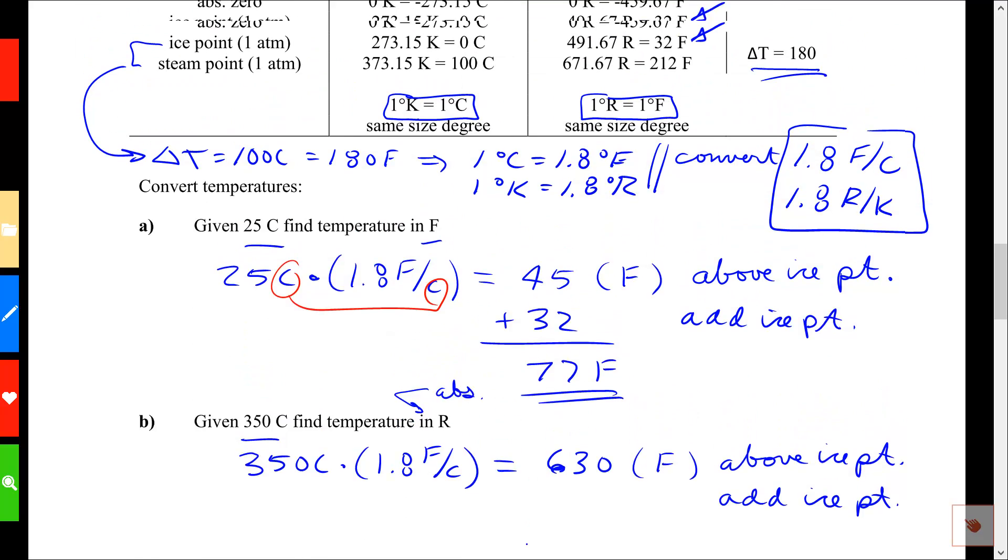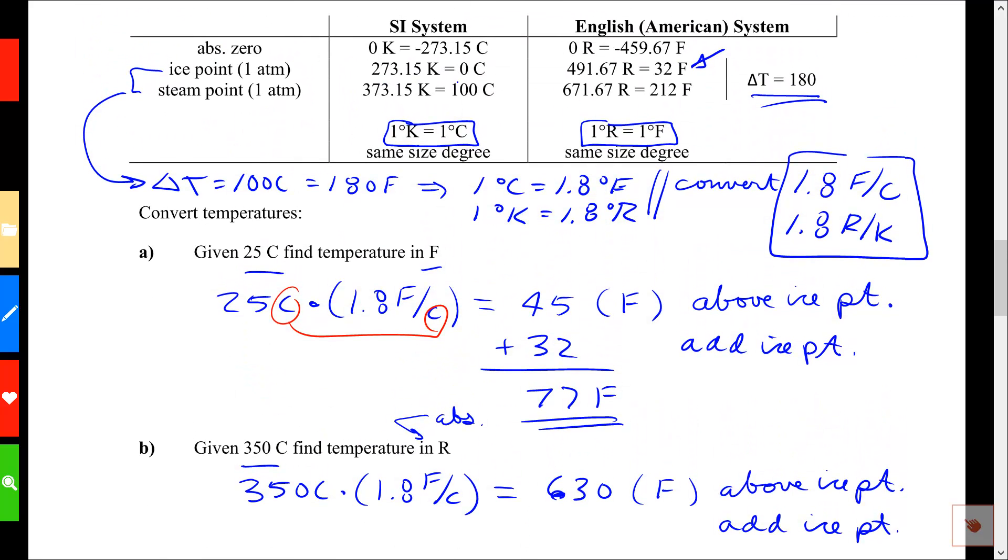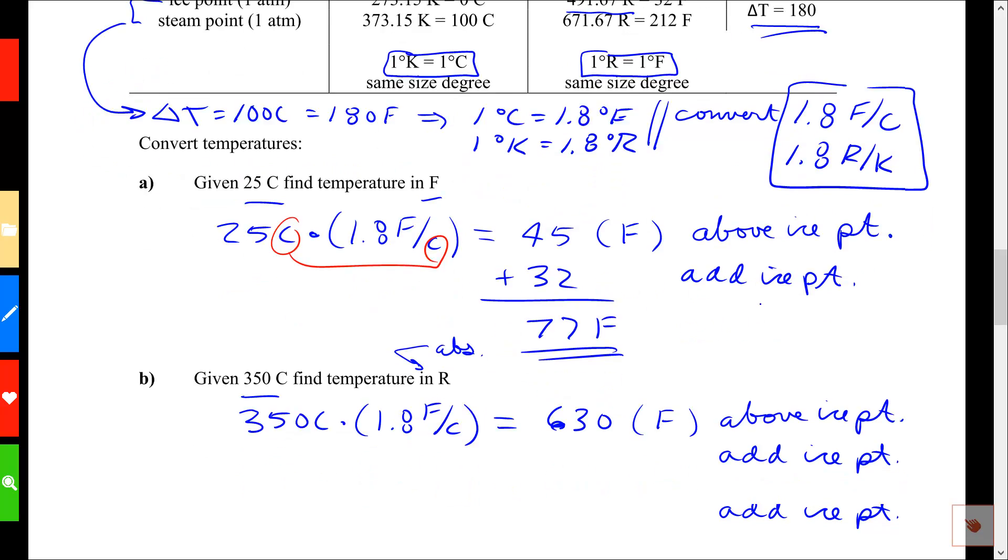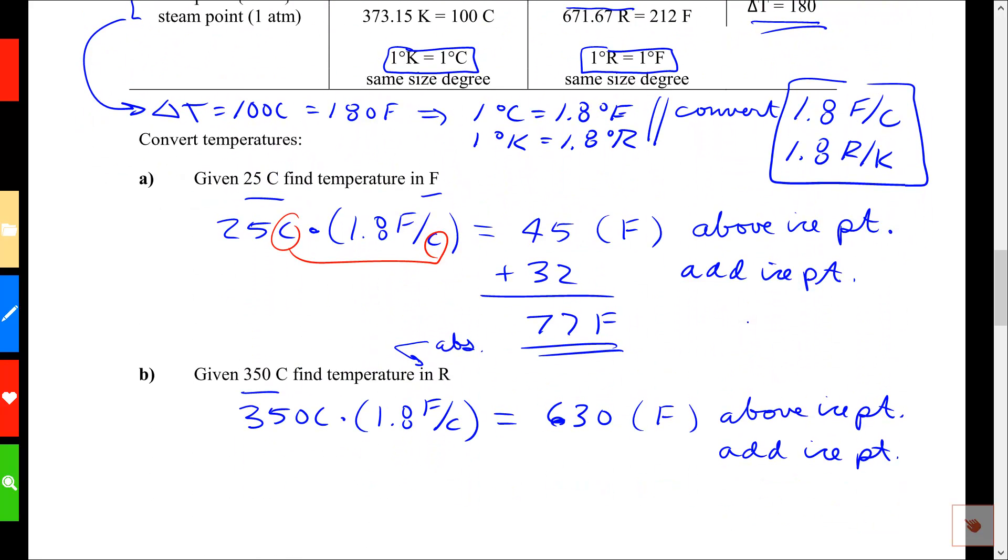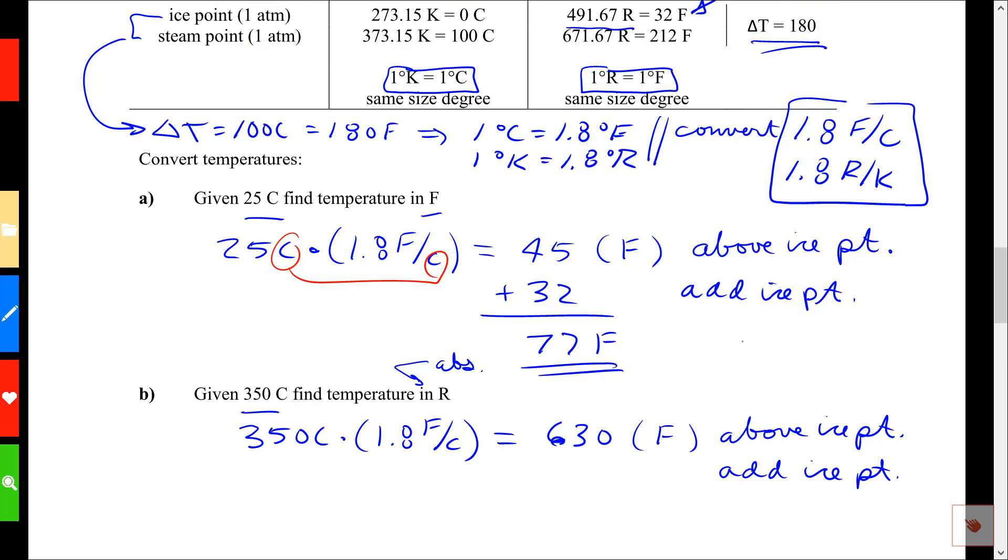Well, what is the ice point in Rankine? Up here, the ice point in Rankine is 491.67. That's the value I'm going to use. Let me pull that. Can I see that? I can sort of see that. Alright, 491.67. Add that, I'm going to get 1121.67. And that is indeed in Rankine, and that is the answer I wanted. So that takes care of example B.